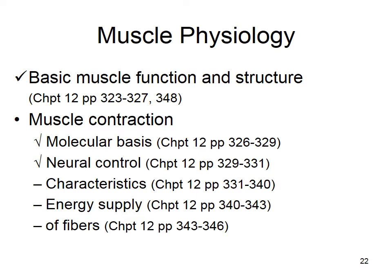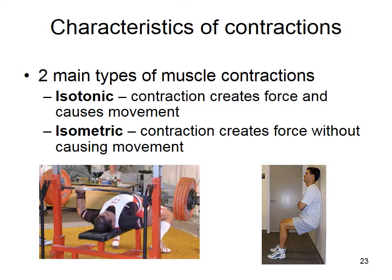Let's talk about characteristics of muscle contraction. There are two main types: isotonic and isometric.